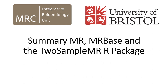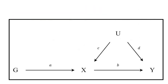Summary MR describes a range of methods that use publicly available genetic data to estimate causal associations. Here is a graph showing a genetic variant G, an exposure X, an outcome Y, and an unmeasured confounder U. Associations between pairs of variables are shown using lowercase letters A through D. We're mainly interested in estimating the effects of the exposure on the outcome, that is, association B. But because we have no information on the unmeasured confounder U, it cannot be included in our statistical models, meaning that if we were to regress the outcome on the exposure alone, we would likely get biased estimates of B due to confounding.